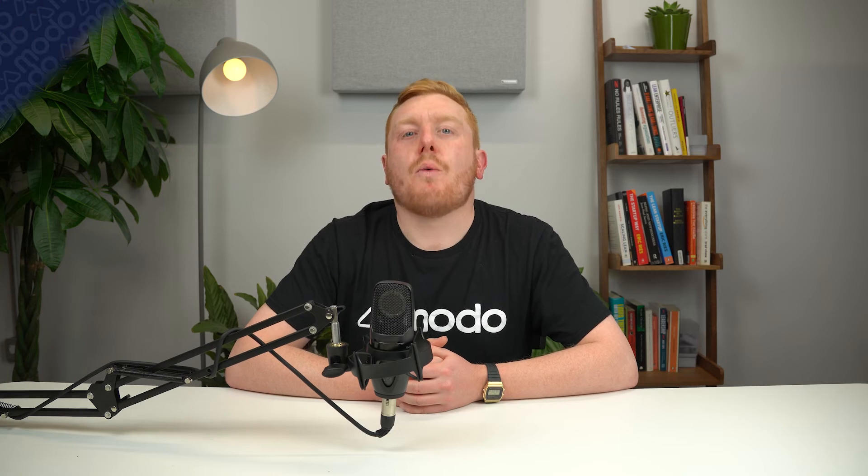Megawatt hours, on the other hand, are the units used to measure energy. One megawatt hour just means that one megawatt of power is sustained for one hour. For example, total electricity demand in Great Britain across 2021 was 270 terawatt hours, which refers to the amount of energy used during that time period.